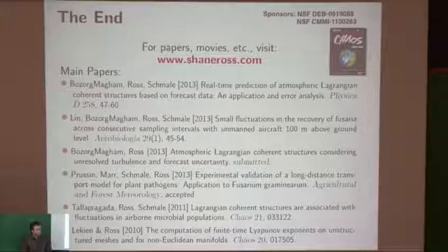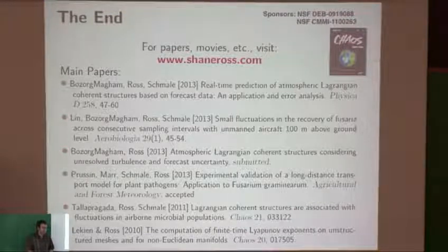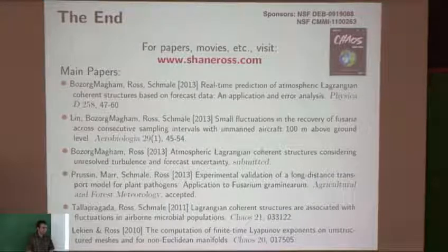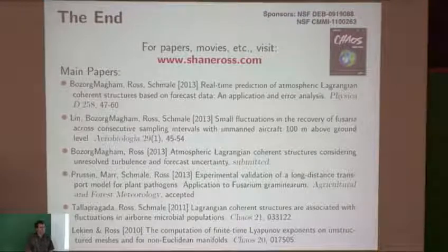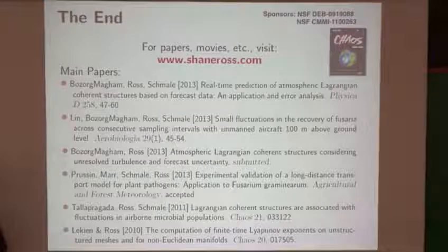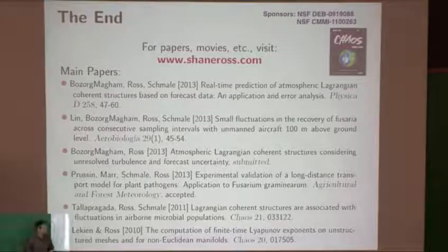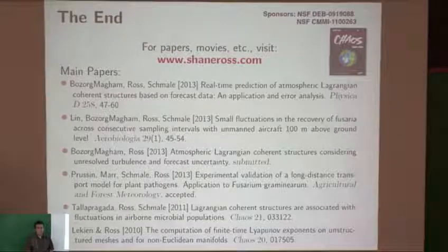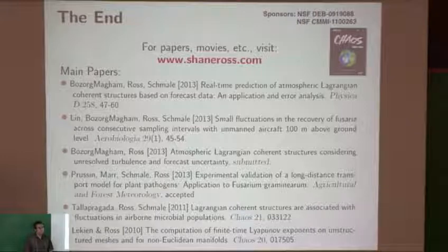Another question about the movies — are these sequential in time? Yes, they're meant to look like material lines; the LCS are very close to material lines. Regarding whether they act as good barriers, there is some leakage but they're very close. A question is raised about the source localization problem — whether knowledge of LCS can help determine where sources are. The current dataset is limited to one location, but there is interest in developing better methods.